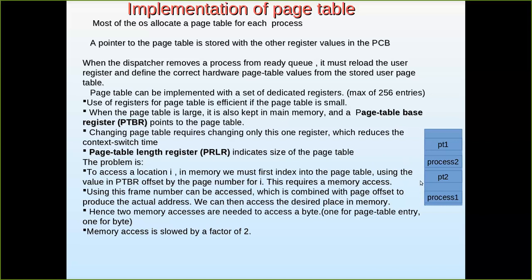There are two memory accesses. One is to the page table, because it is stored in the main memory, to get the respective frame number for that page. Then the frame number combined with the page offset is used to produce the actual address and access the desired place in memory. So two memory accesses are needed to access a byte — one for the page table entry and another for the actual page itself. Memory access is thus slowed down by a factor of two.